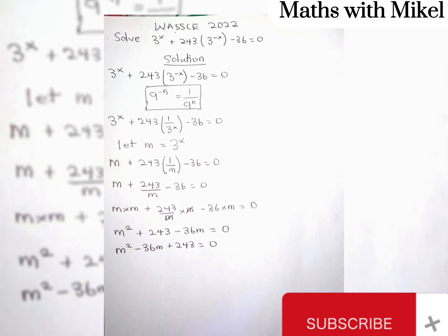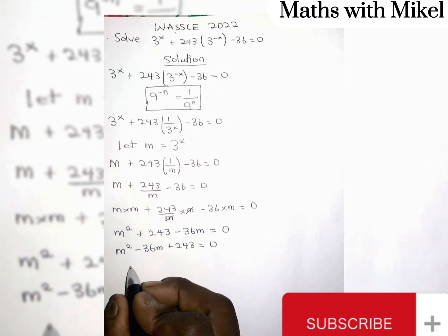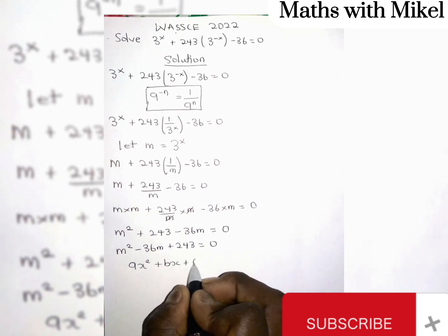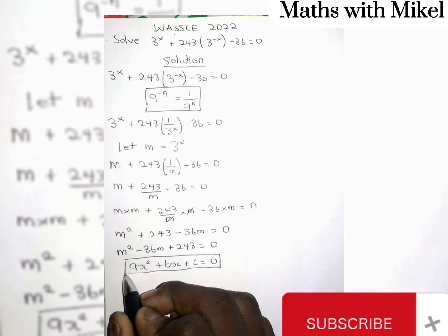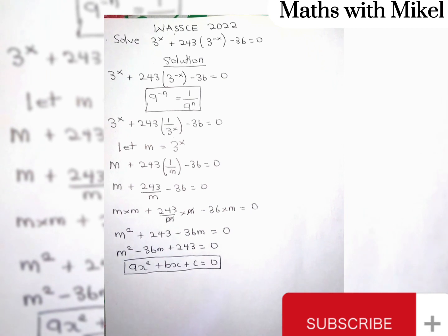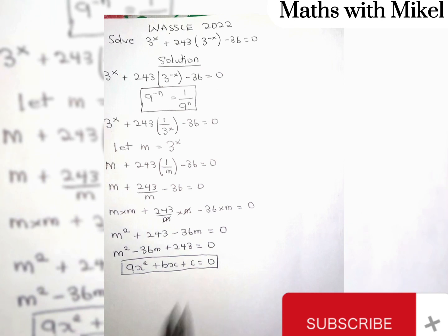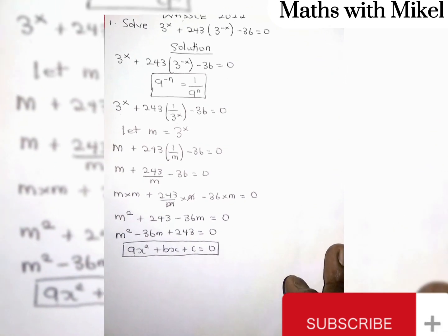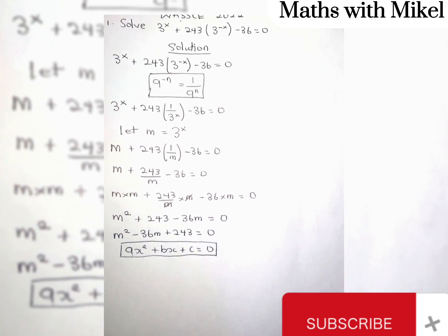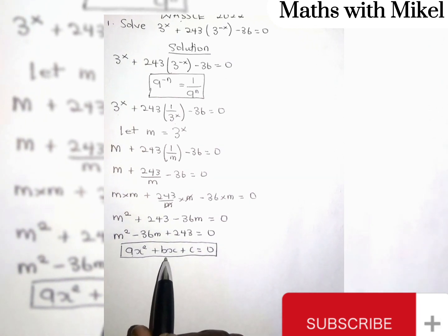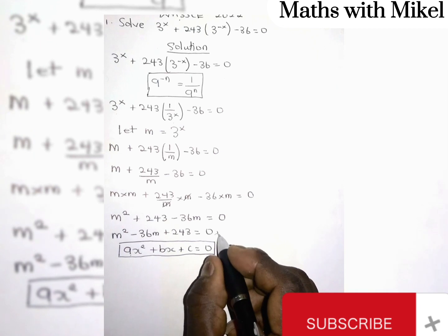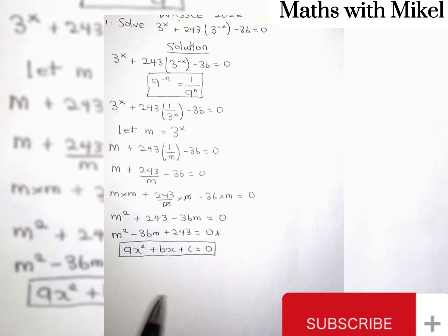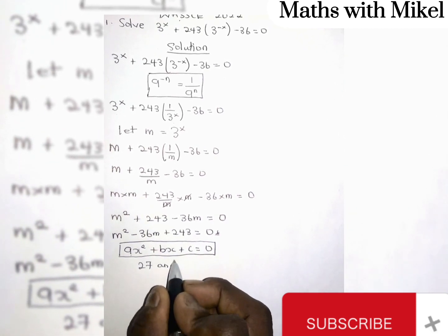This equation looks like the general quadratic equation ax squared plus bx plus c equals 0. To solve it, multiply the coefficient of m squared by the constant c and find the factors of that answer. From the factors, pick two numbers that when added give the coefficient of m (which is b), and when multiplied give the product of a and c. The two factors here will be negative 27 and negative 9.